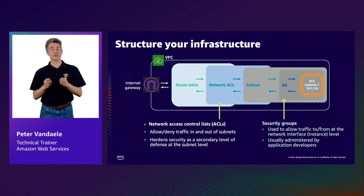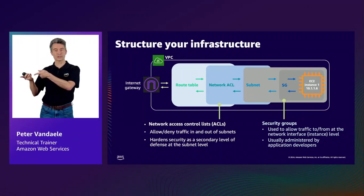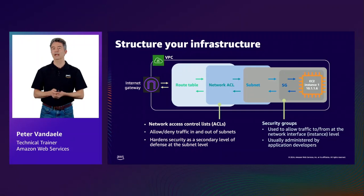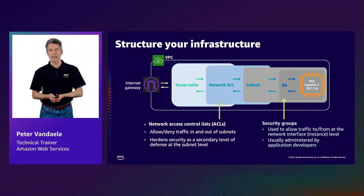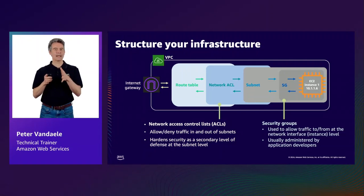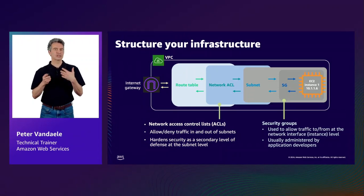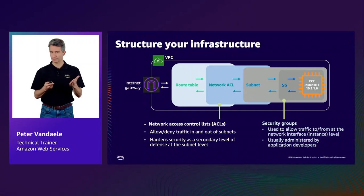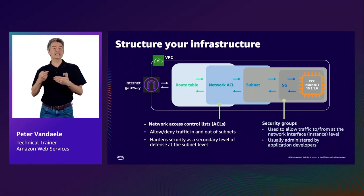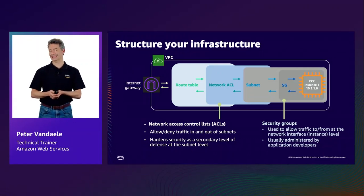Route tables contain a set of rules called routes that determine where network traffic is directed. For the public subnets, the route table must have a route that directs traffic from your EC2 instance to the internet gateway. Surrounding the subnets, we have network access control lists — virtual firewalls that act as stateless packet filters at the subnet level, making decisions on whether traffic can enter or leave the subnet. Use network ACLs to restrict specific protocols, ports, or apply explicit block rules.